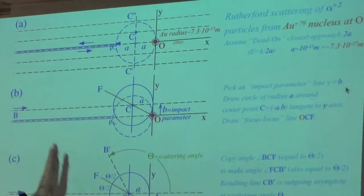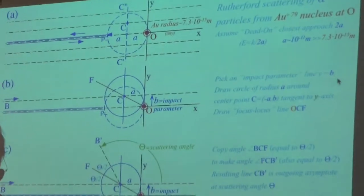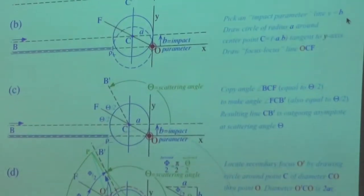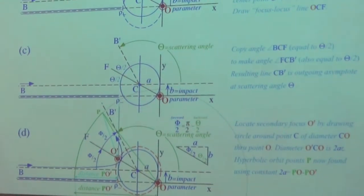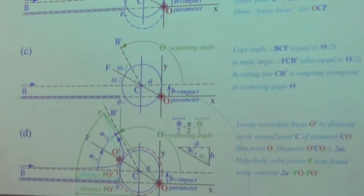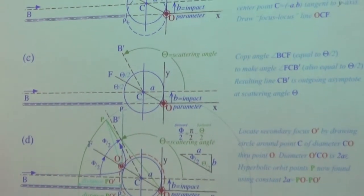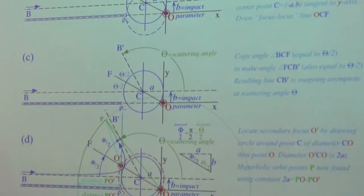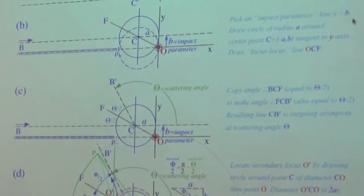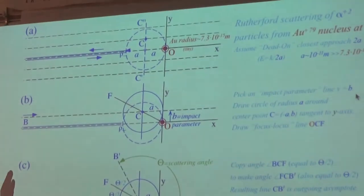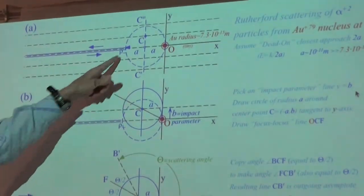The rest of the orbits deflect and never stop. That head-on particle stops because of electrostatic Coulomb repulsion. All the other orbits never come to a complete stop, but this one does. This is the special orbit that we base our geometry on.